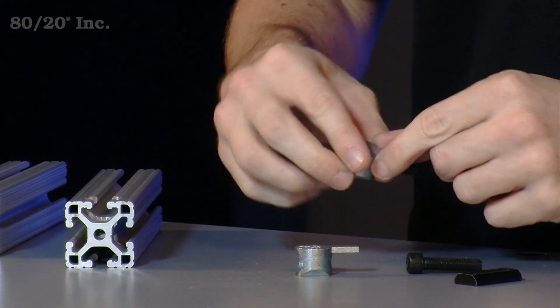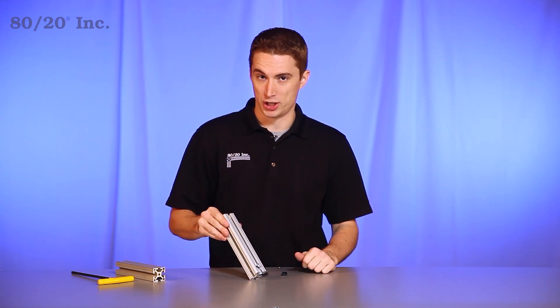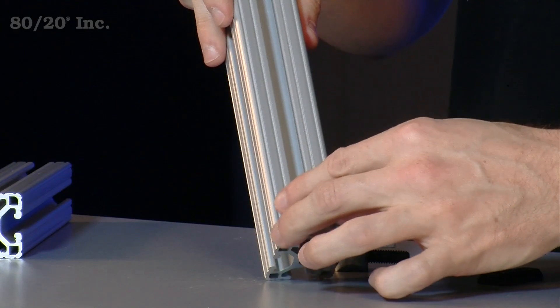Now when it comes to installing the double anchor fastener, you're going to start with your bolts. Take your bolts, put them in your cams. At that point, you're going to take your bar with the counterbore machined into it and place the cams into the counterbores.